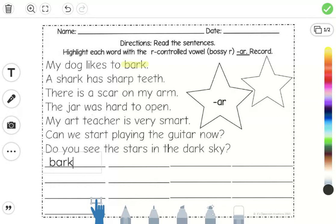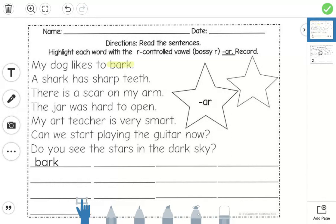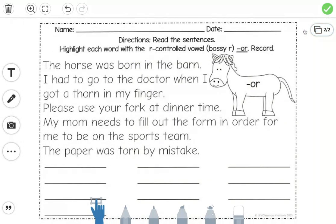You're going to do the same thing for the second page with OR words. I'm going to click the fourth one over for the highlighter and I will read the first sentence. We are only looking for OR words and I'm only going to highlight the first one I see. The horse was born in the barn.